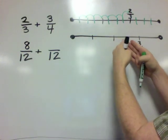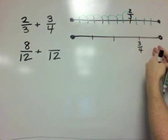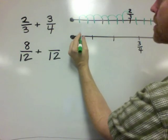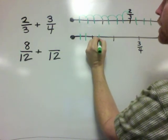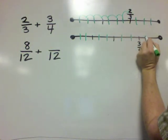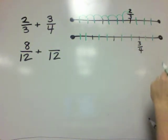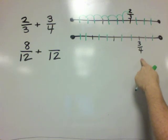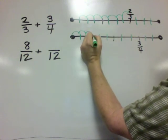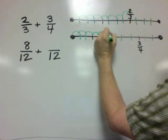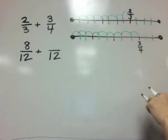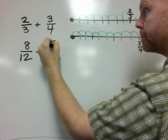And then down here, we're going to cut each of these four intervals into three pieces — cutting in 1, 2, 3 for each interval. So instead of this being three-fourths, it now becomes nine-twelfths.